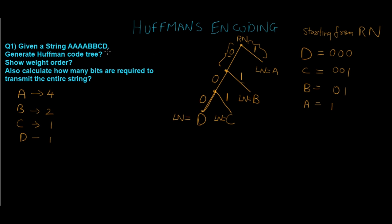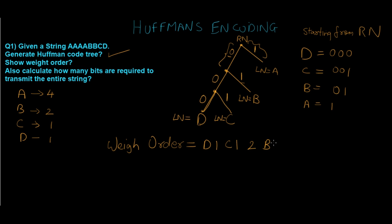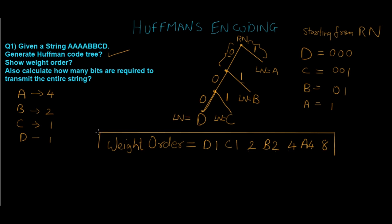Now for the weight order, which is essentially the frequency assignment listed from lowest to highest. d has frequency 1, c has frequency 1, their combined total is 2. The next character b has frequency 2, combined total of 2 and 2 gives 4. Then a has frequency 4, and the final total of 4 and 4 gives 8.